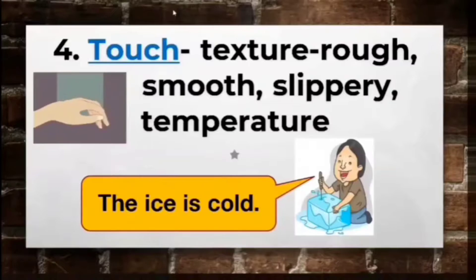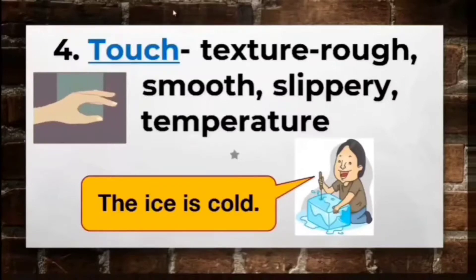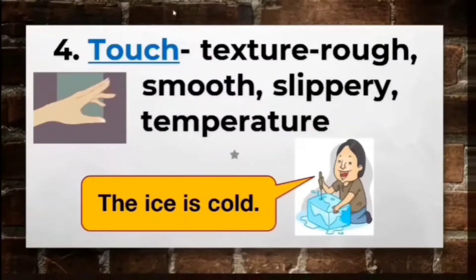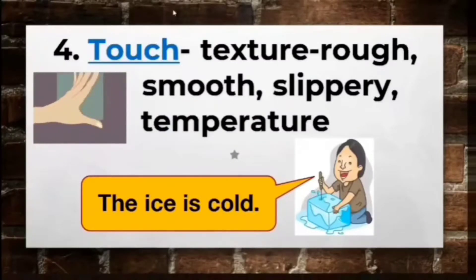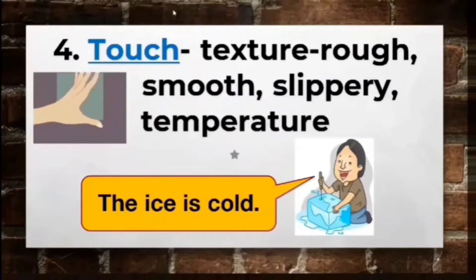Your skin, especially your hands, acts as the organ for the sense of touch. Our skin can tell us the texture of an object that we are observing — it can be smooth, rough, slippery, hard, or soft. It can also tell us the temperature of an object, whether it is hot or cold. A man holding ice is an example; the statement describing the ice is: the ice is cold. The word cold describes the temperature of the ice. Write at least two sentences that use your sense of touch — all you need to do is touch and feel the objects within your reach.